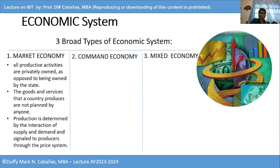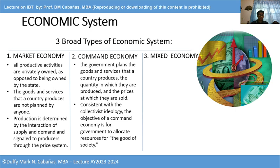In the market economy, all productive activities are privately owned as opposed to being owned by the state. The goods and services that a country produces are not planned by anyone — production is determined by the interaction of supply and demand, which signals to producers. The objective of a command economy, on the other hand, is for the government to allocate resources for the good of society. So the market economy aligns with individualism, while the command economy aligns with collectivism.